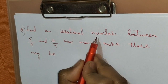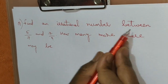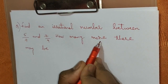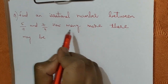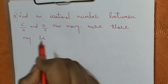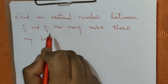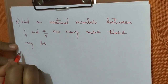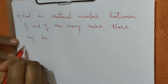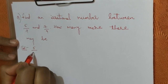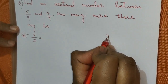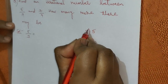Next, find an irrational number between 5 by 7 and 7 by 9. How many more may there be? You have to find the irrational numbers between 5 by 7 and 7 by 9. First, let us convert 5 by 7 into decimal form: 5 divided by 7.